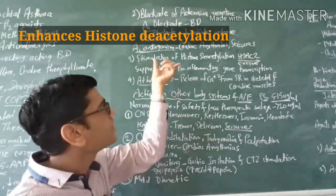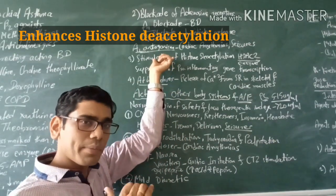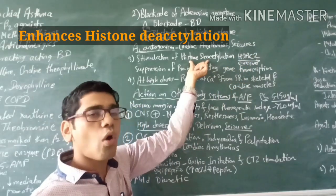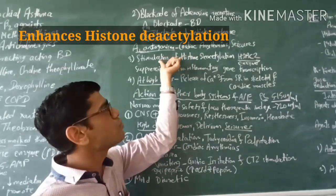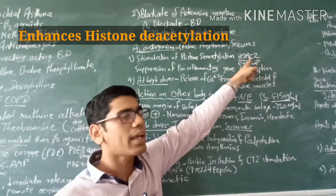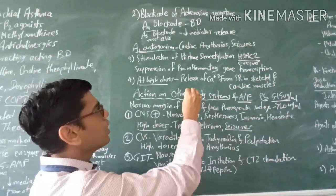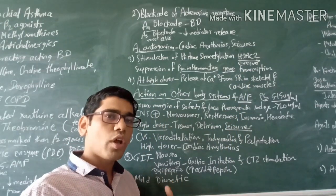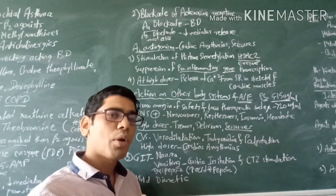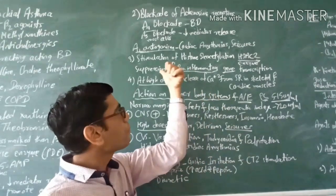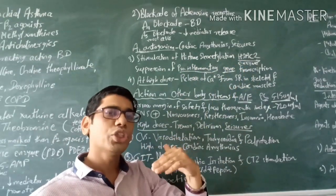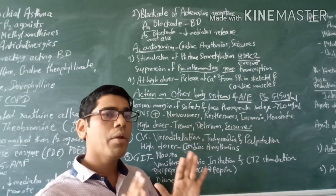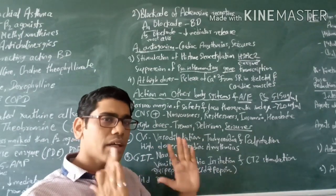The third mechanism — very recently discovered — is that theophylline at sub-therapeutic doses stimulates the enzyme HDAC2, stimulating histone deacetylation. HDAC2 is responsible for transcription of pro-inflammatory genes — those responsible for producing NF-kappa-β and TNF-alpha. By suppressing pro-inflammatory gene transcription, theophylline suppresses NF-kappa-β and TNF-alpha levels and produces an anti-inflammatory effect, even at sub-therapeutic doses.